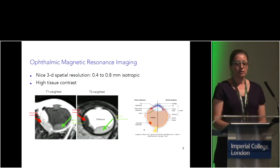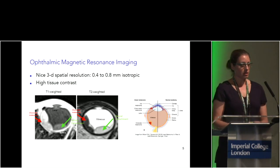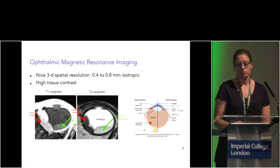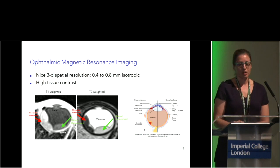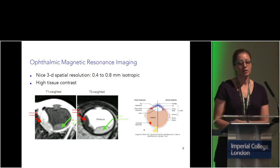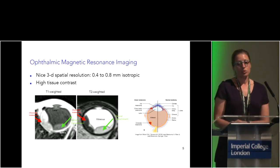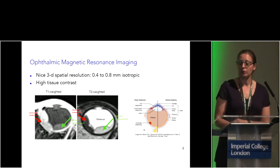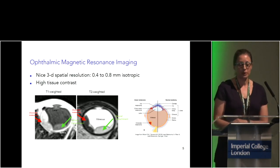This is where magnetic resonance imaging came into the picture. MRI in ophthalmic images is more and more used, thinking about retinoblastoma in children and uveal melanoma in adults. We have quite good spatial resolution — 0.4 to 0.8 isotropic — and very good tissue contrast.